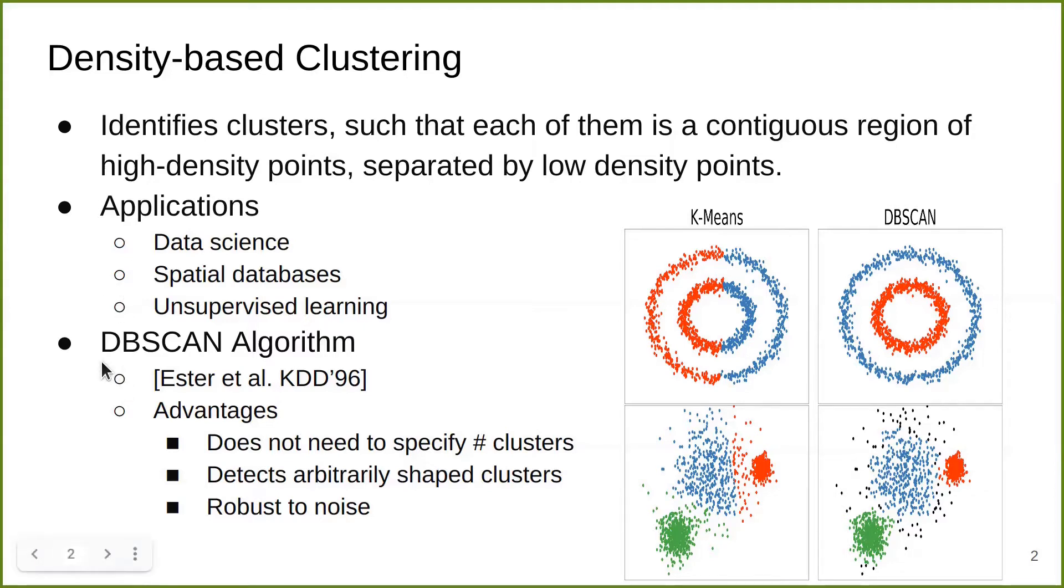We focus on the most famous density-based clustering algorithm, DBSCAN, invented in 1996 by Ester et al. It has many advantages. It doesn't require a user to specify the number of clusters beforehand, detects arbitrarily shaped clusters, and is also robust to noise.